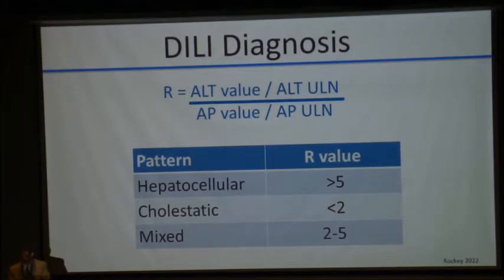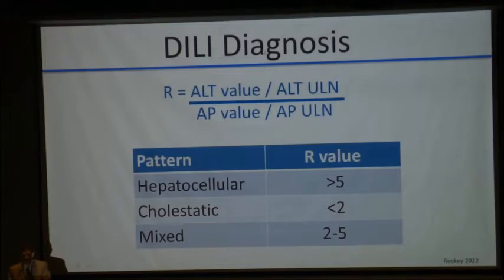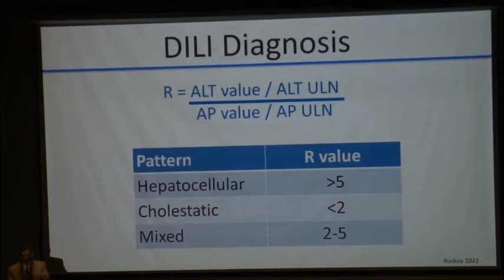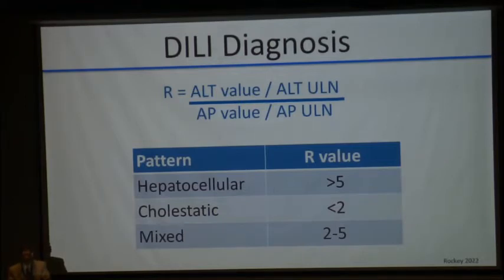The R value comes into play when we assess the latency and de-challenge components — the timing elements of the RUCAM. The R value is ALT divided by alkaline phosphatase. We generally divide drug-induced liver injury into three categories: primary hepatocellular, cholestatic, or mixed reactions. Most drugs have a phenotype of one or more of these R values. In our patient, the R value is 14, so that's a primary hepatocellular reaction.